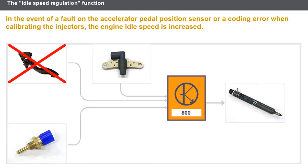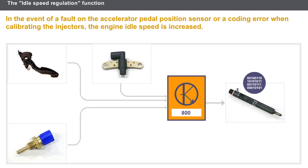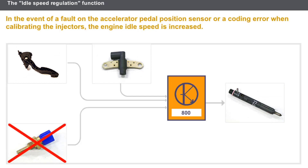In the event of a fault on the accelerator pedal position sensor, the injection computer controls the engine to run at a constant high idle speed. In the event of a coding error when calibrating the injectors, the engine idle speed is a little higher. A coolant temperature sensor fault may lead to an unsuitable programmed engine speed.